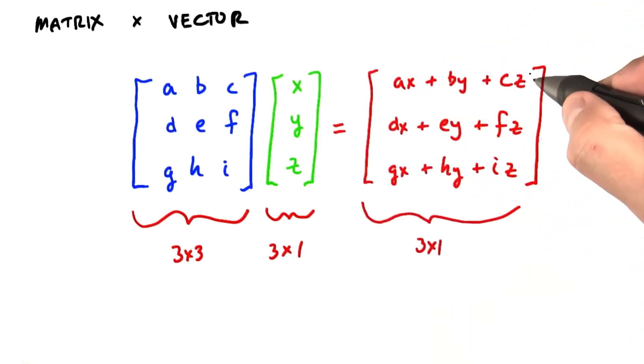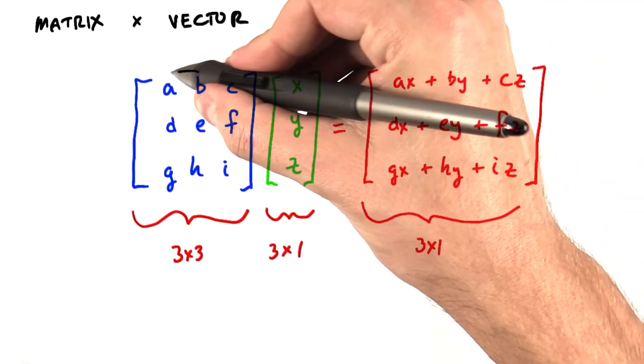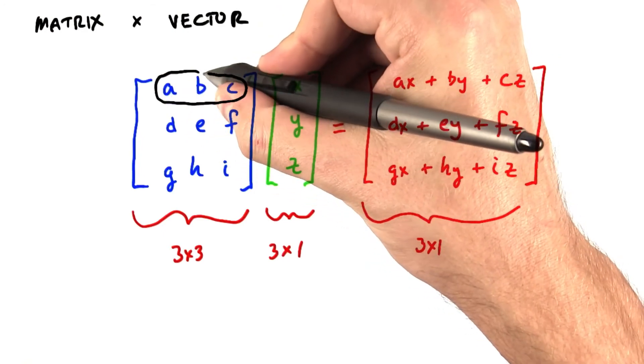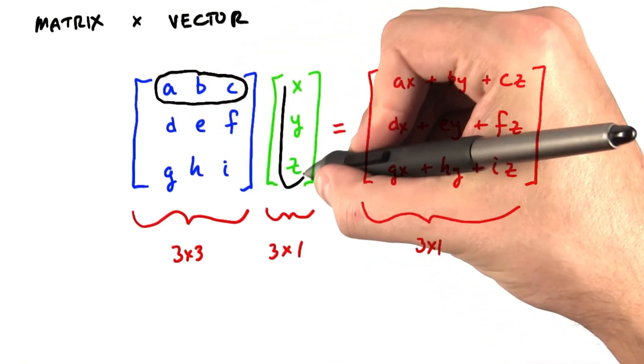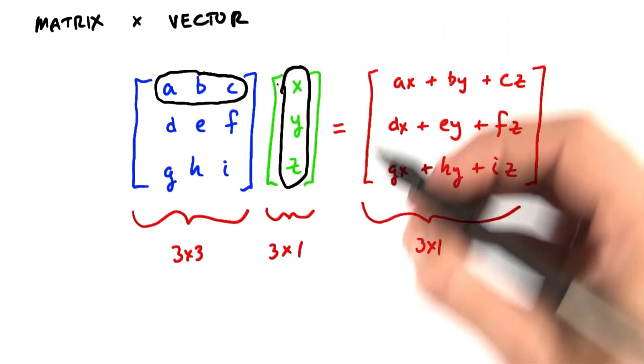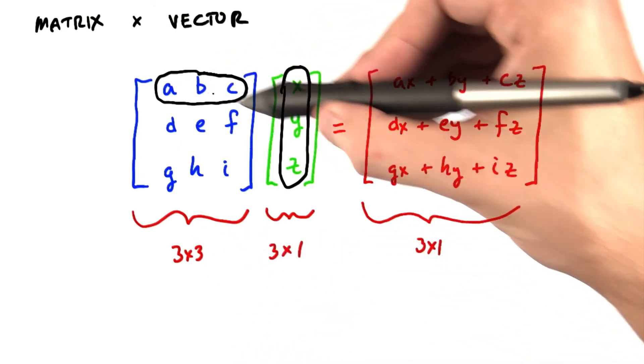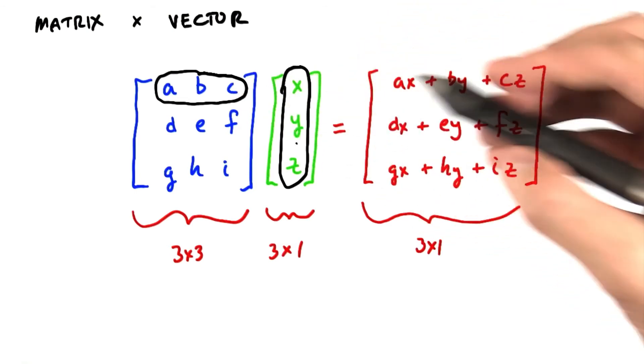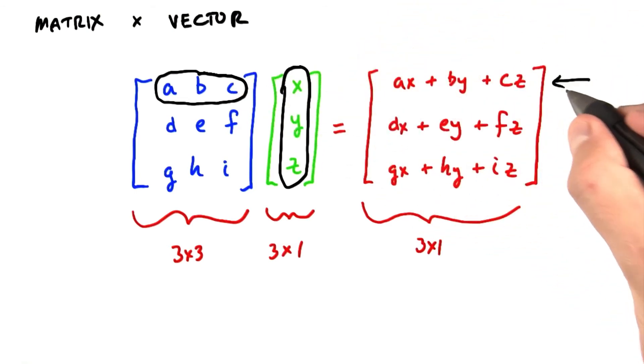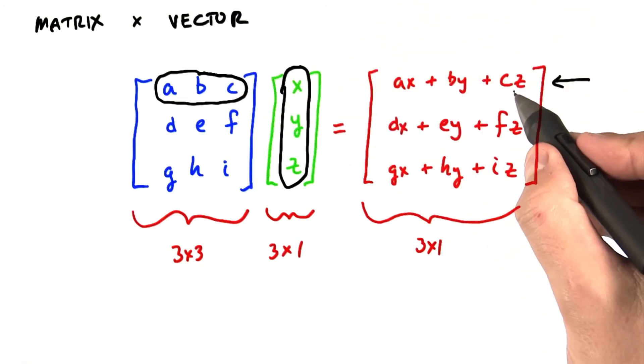For each output in the output vector, we multiply the row of the input matrix by the column of the input vector. So we do this in a pairwise way, a times x plus b times y plus c times z. And that will create the entry here, ax plus by plus cz.